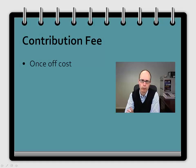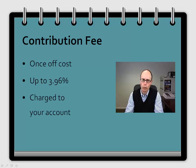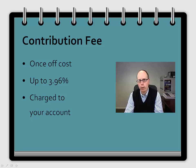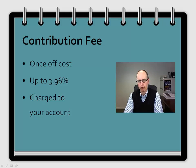The first fee is a once-off fee called a contribution fee. It is charged directly to your account and the rate is 3.96%. It is paid every time you make a contribution — the first time and every time thereafter — except if you choose to have your distributions reinvested, in which case there is no contribution fee on those reinvested distributions.